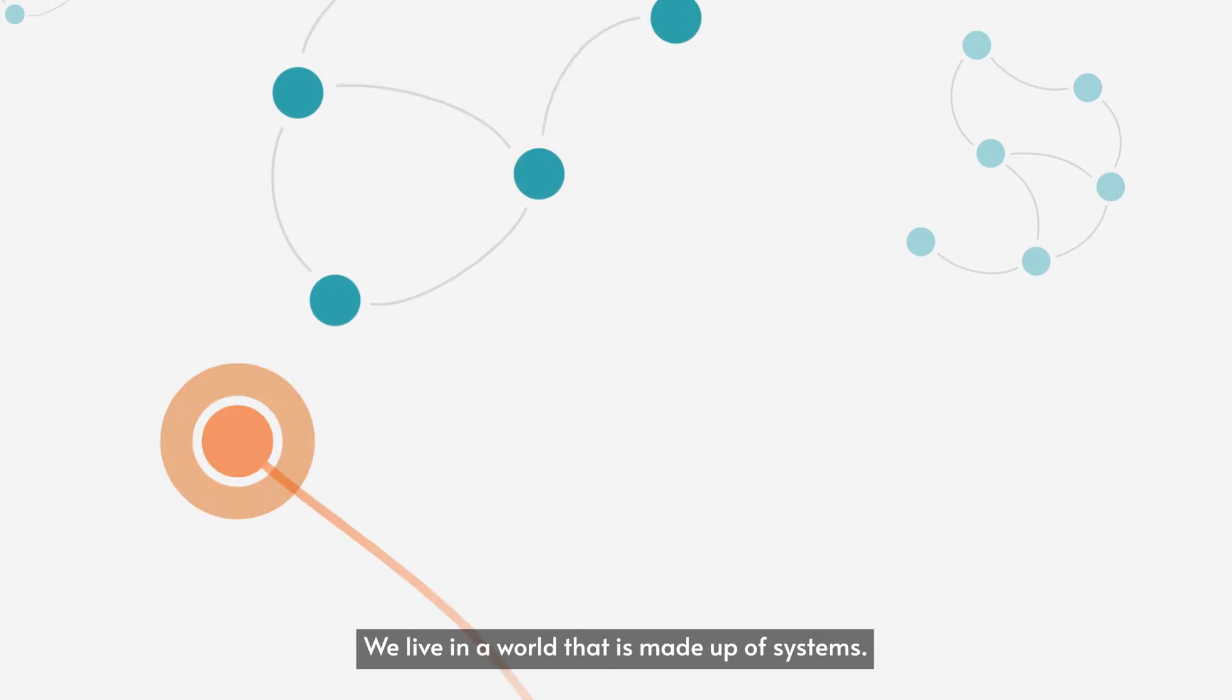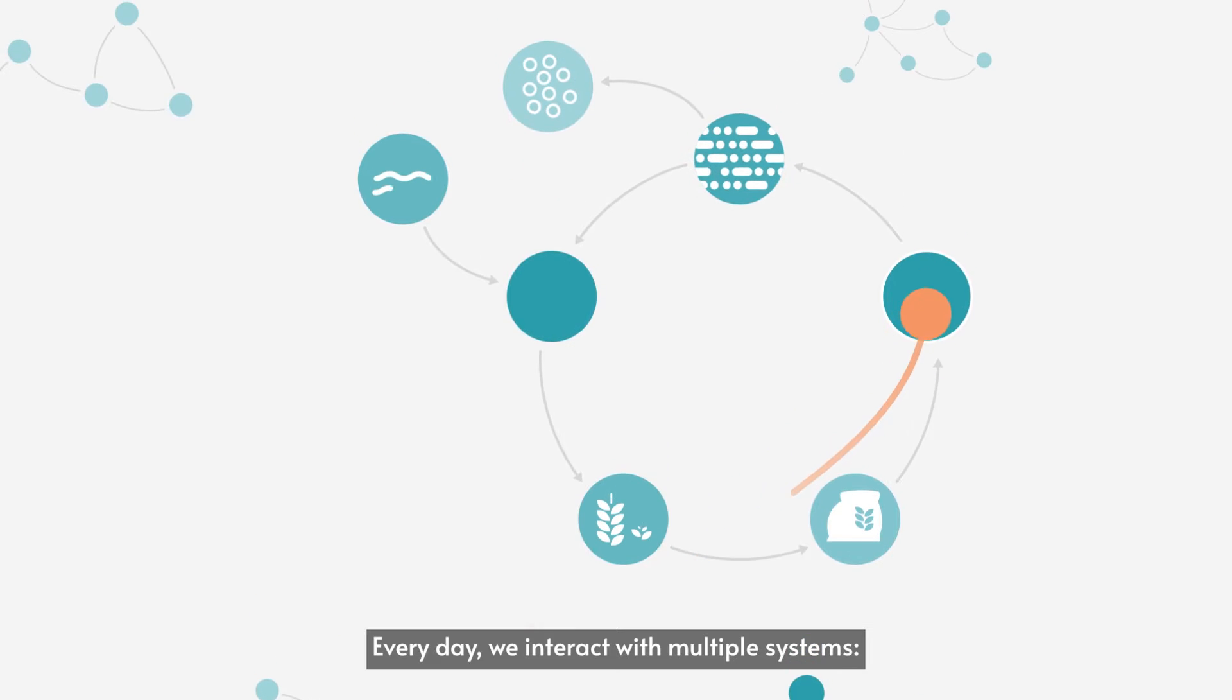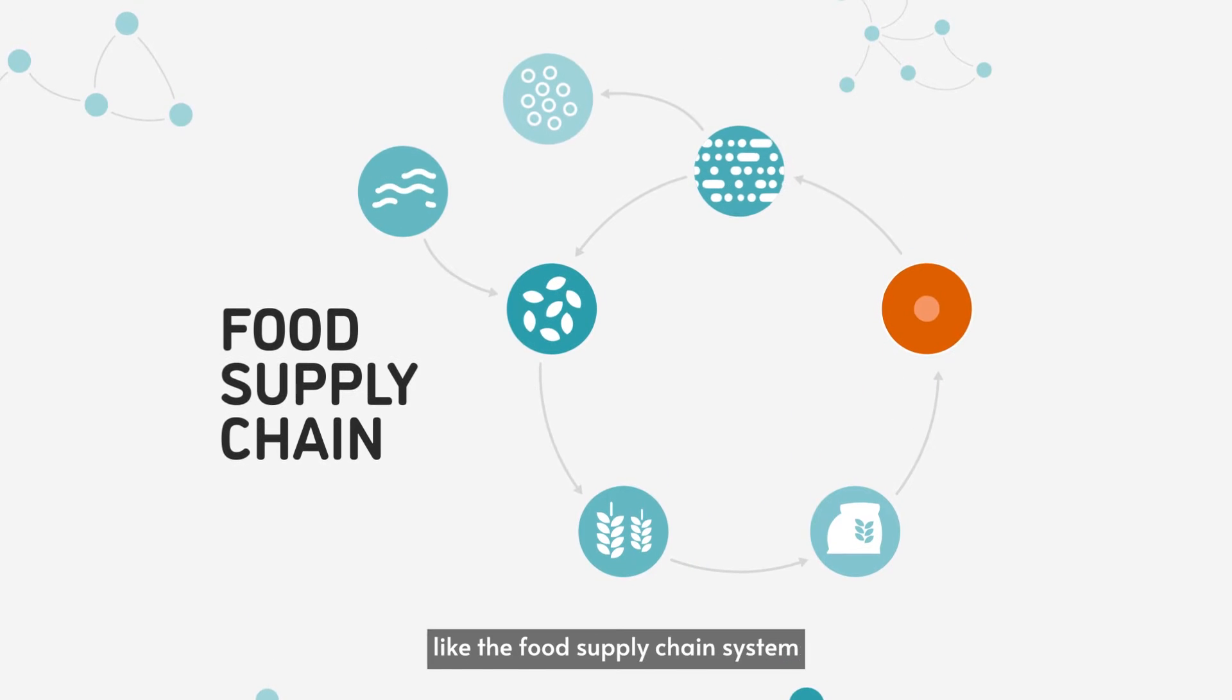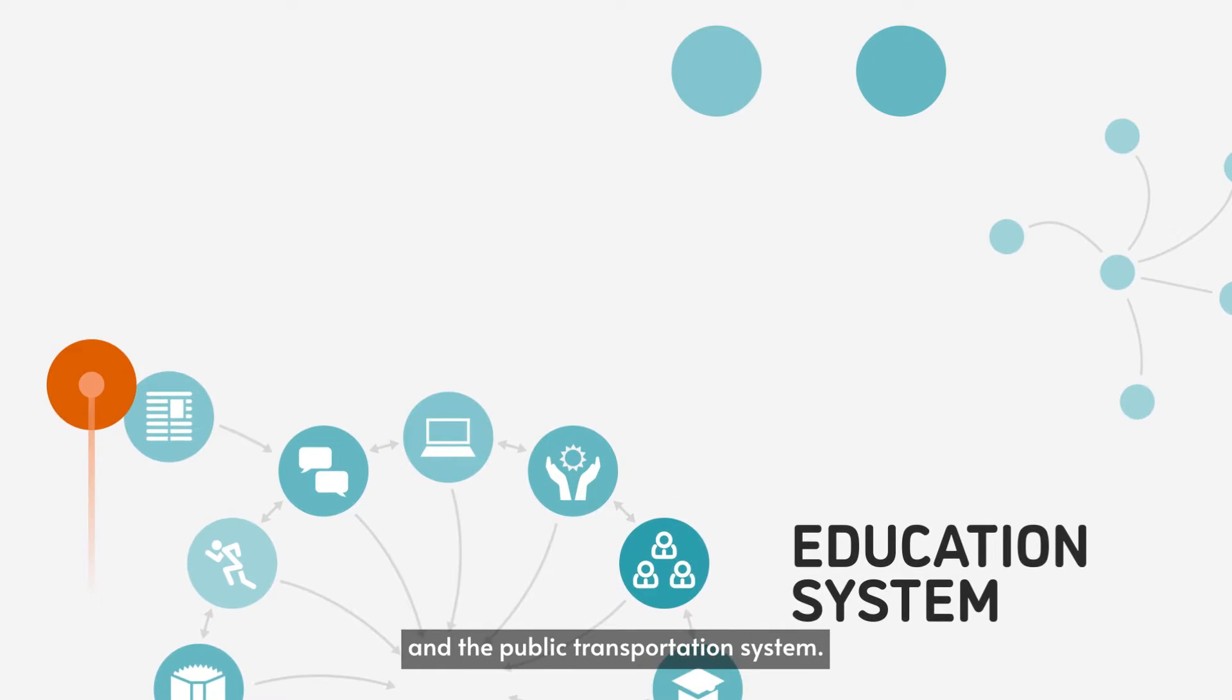We live in a world that is made up of systems. Every day, we interact with multiple systems, like the food supply chain system, the education system, and the public transportation system.